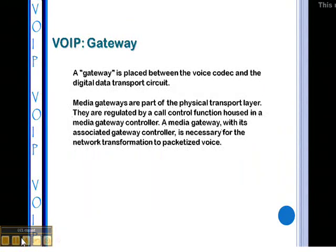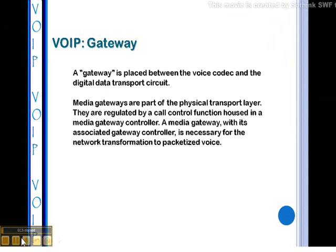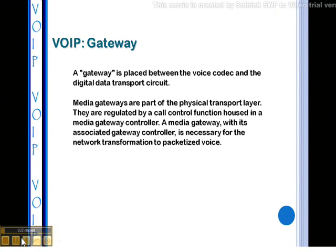VoIP Gateway: A gateway is placed between the voice codec and the digital data transport circuit. Media gateways are part of the physical transport layer and are regulated by a call control function housed in a media gateway controller. A media gateway with its associated gateway controller is necessary for the network transformation to packet-sized voice.